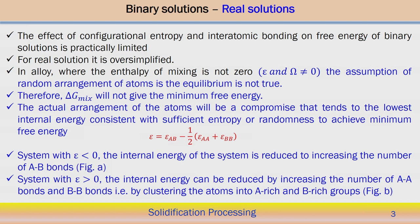We can look into other aspects also. In the actual arrangement of atoms, we need to compromise — it tends to have the lowest internal energy in case of the actual solution. So it always tends toward having consistent internal energy, but along with sufficient entropy — more randomness to the solution — and that should be accounted to achieve the minimum free energy. That is why we calculated the bonding energy: epsilon equal to epsilon_AB minus half of (epsilon_AA plus epsilon_BB) in case of the binary solution.